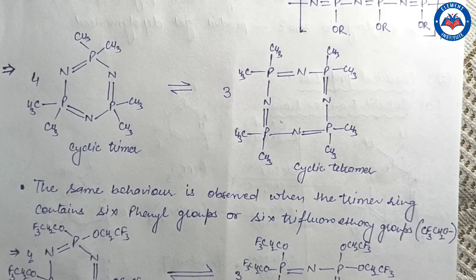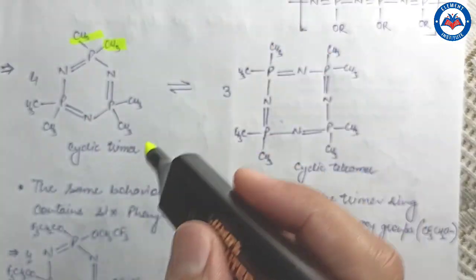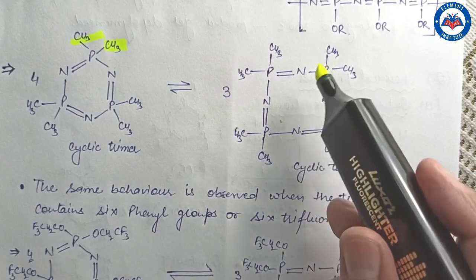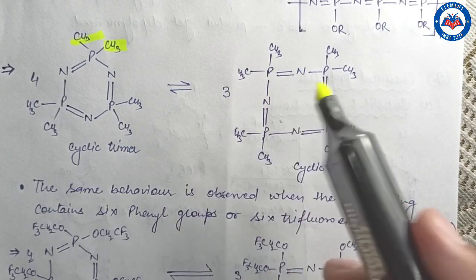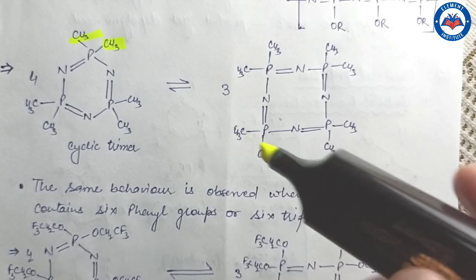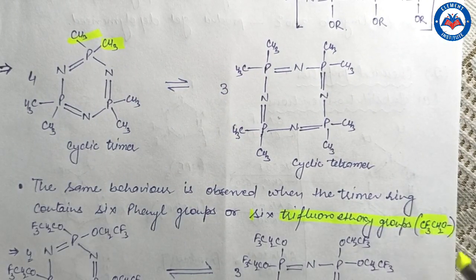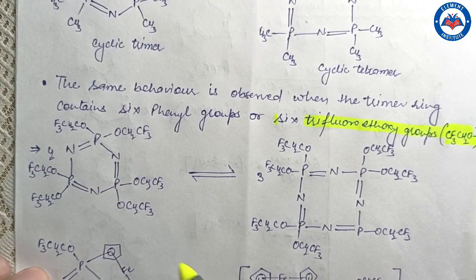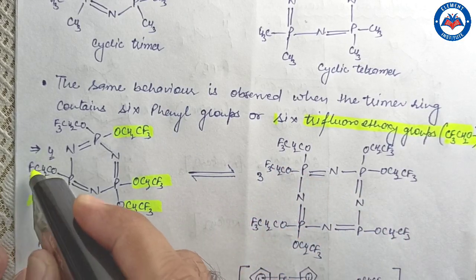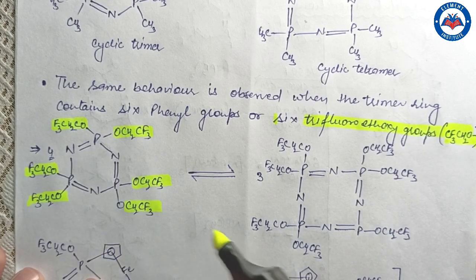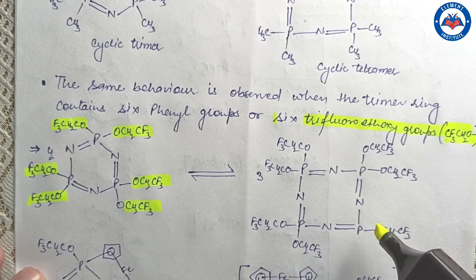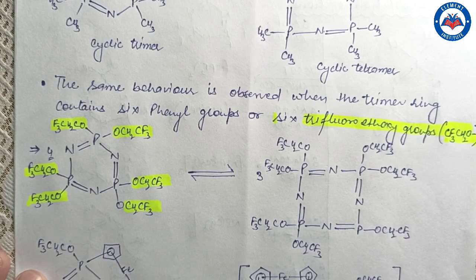If the cyclic trimer contains six methyl groups, it undergoes ring-ring equilibration to the eight-membered cyclic tetramer on heating but does not polymerize to higher polymers. The same behavior is observed when the trimer ring contains six phenyl groups or six trifluoroethoxy groups. For example, a molecule in which all halogens have been substituted by trifluoroethoxy groups will, on heating, undergo ring-ring equilibration to form the tetramer structure and will not polymerize to a linear polymer chain.